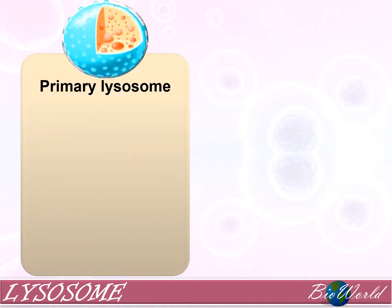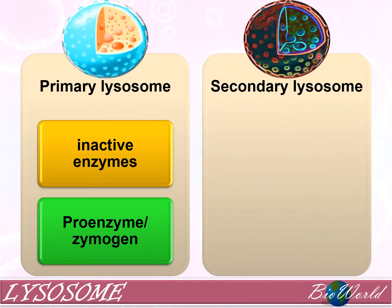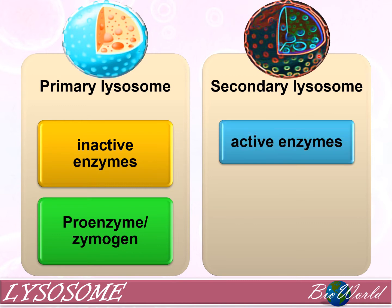There are two types of lysosomes. Most of the time cells will contain primary lysosomes. Primary lysosomes have inactive hydrolytic enzymes, which we can call proenzymes or zymogens. But when the cell is functioning, the primary lysosomes convert into secondary lysosomes. Secondary lysosomes have active hydrolytic enzymes.